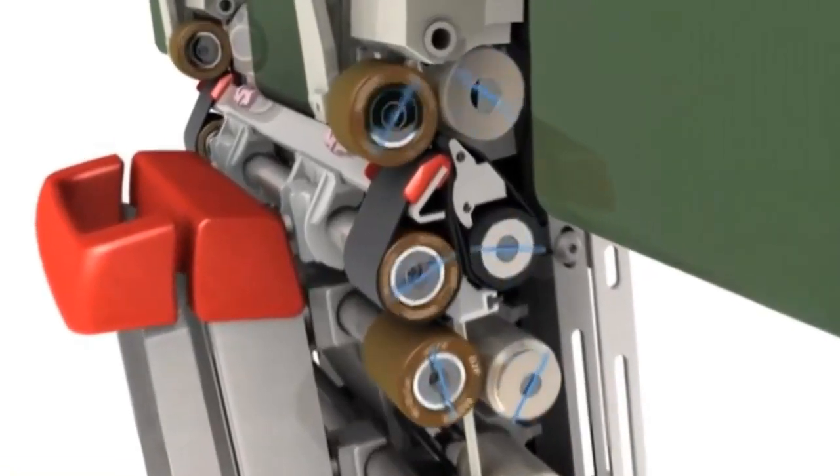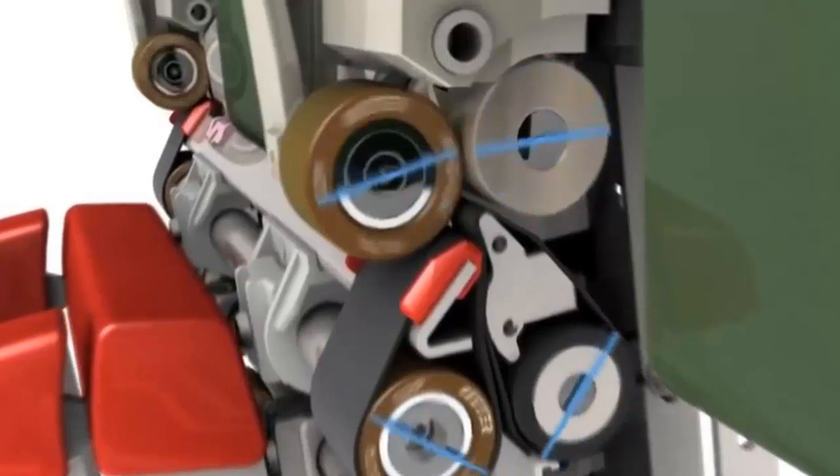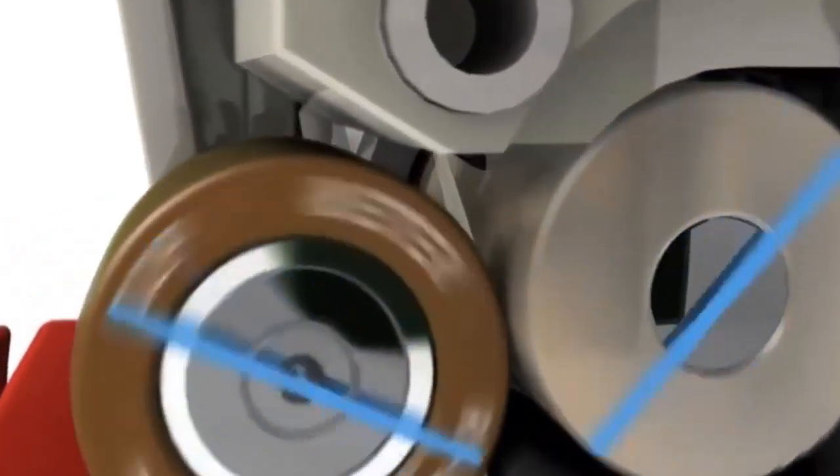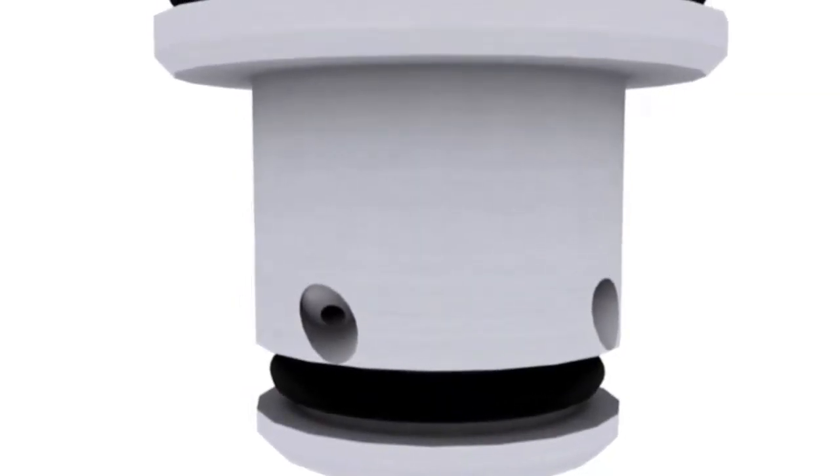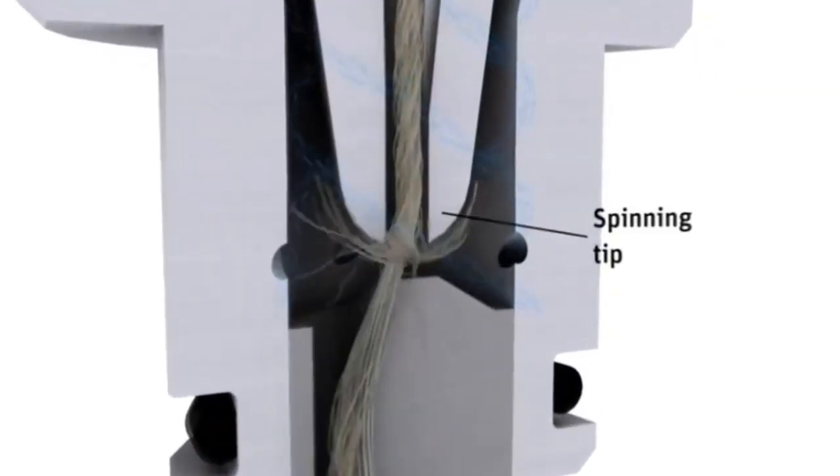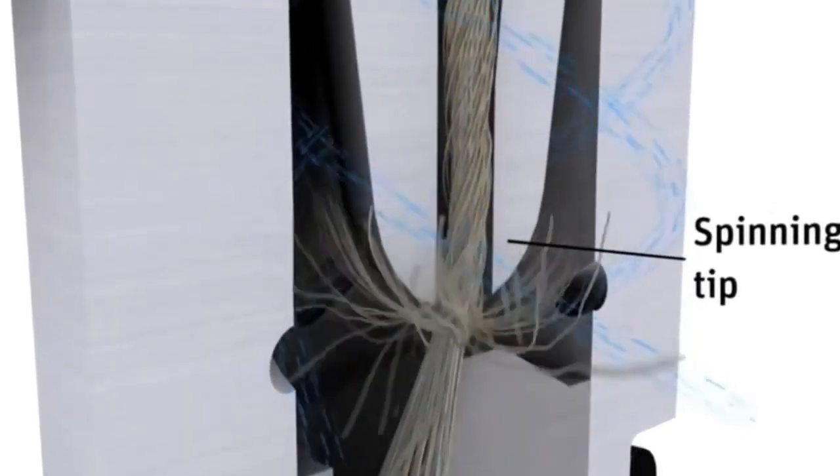Fibers that leave the drafting zone are guided through the fiber feeding element (FFE) by means of negative pressure. The FFE shape is designed to keep the fibers controlled in the parallel position for entering into the spinning tip.